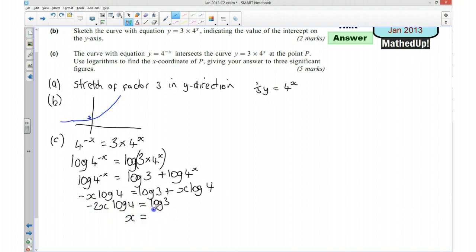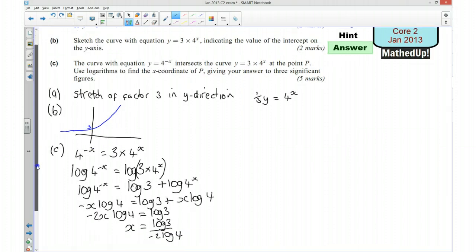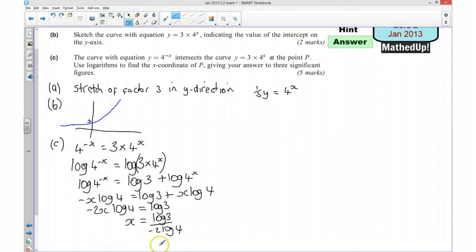And that's going to tell me that x is equal to log 3 over negative 2 log 4. And if I put that into my calculator, that's going to tell me that to 3 significant figures, x is going to be equal to minus 0.396.